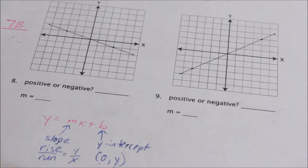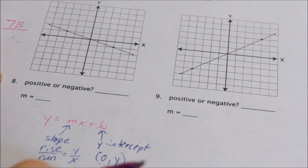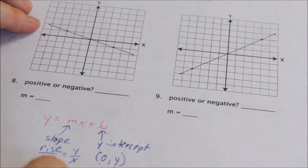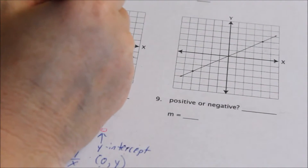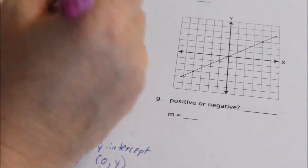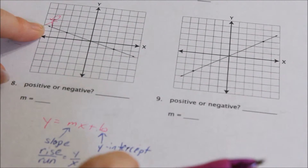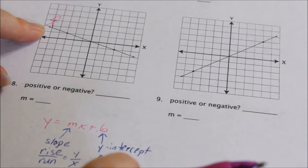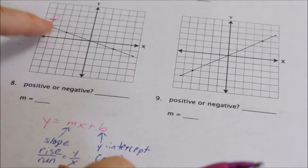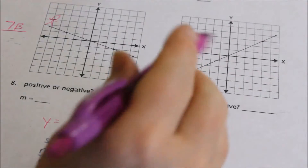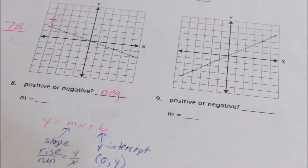We're on 7b, let's look at problem number 8. The first thing they're asking is: is this a positive or negative slope? What I like to do is on the very leftmost part of your line, you draw a little man. Is your man skiing down the slope or climbing up the slope? In this case he is skiing down, so that is a negative slope.